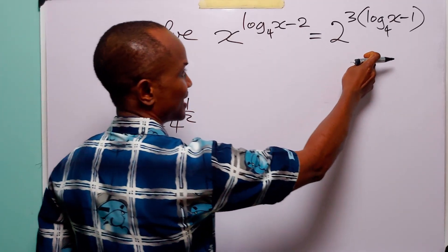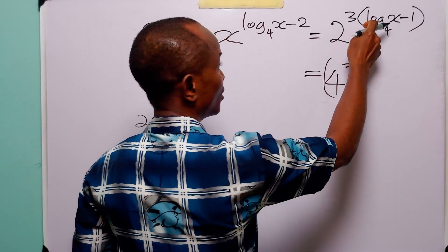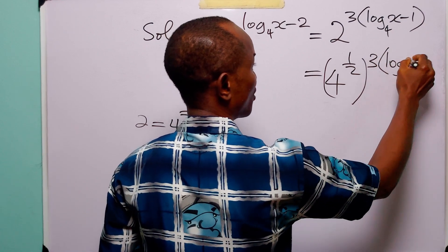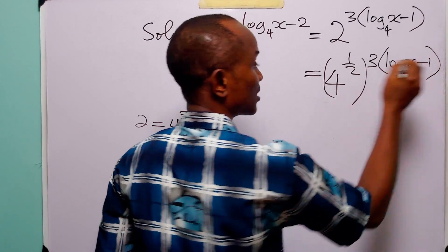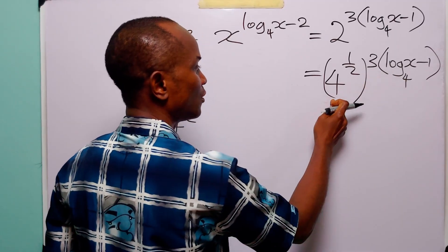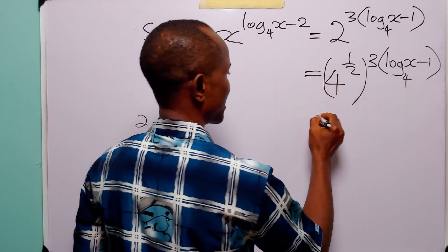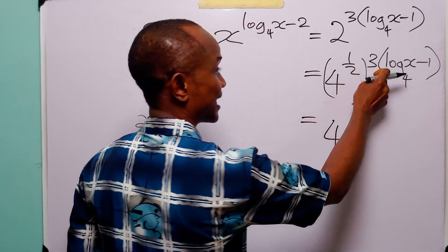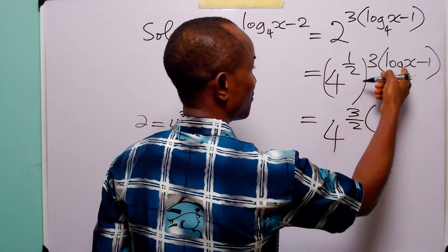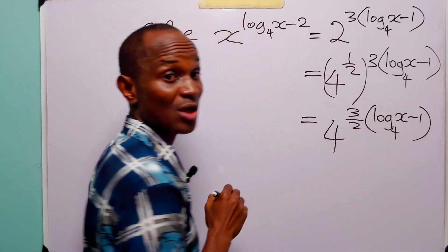So on the right hand side of this equation, we are going to have 4 to the power half, to the power 3 multiplied by log to base 4 of x minus 1. And of course, when we have two powers like this, all we have to do to get rid of the brackets is to multiply both of them. So here we have 4 to the power half times 3, which is 3 over 2 — so this is 3 over 2 multiplied by log to base 4 of x minus 1.